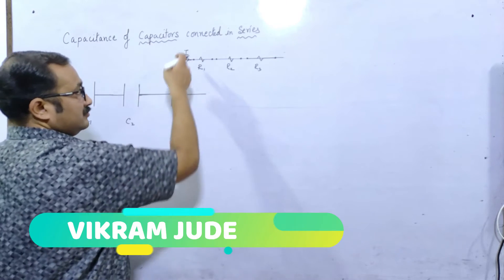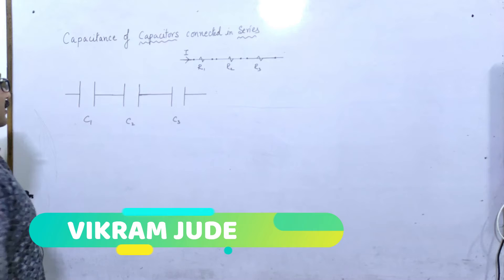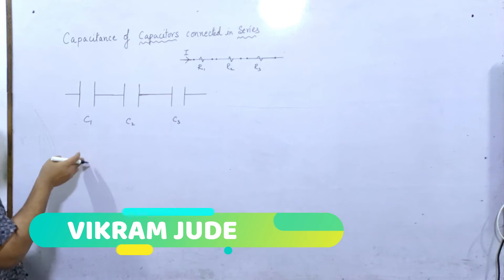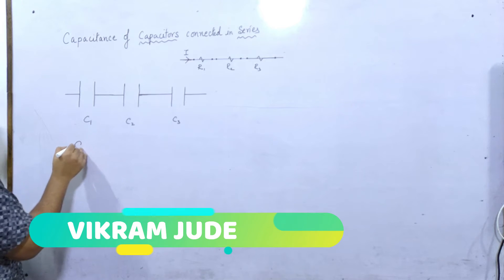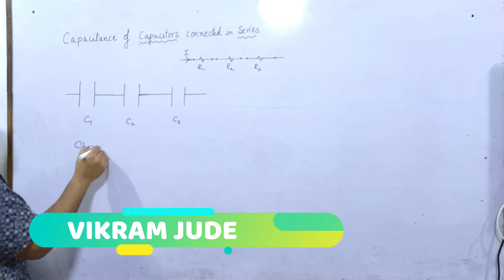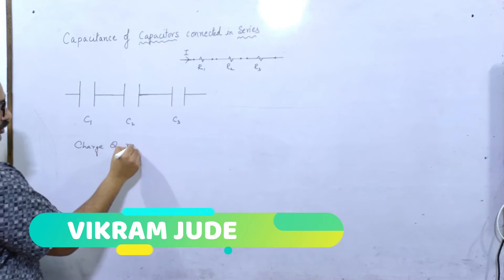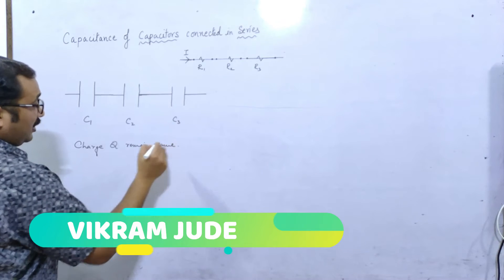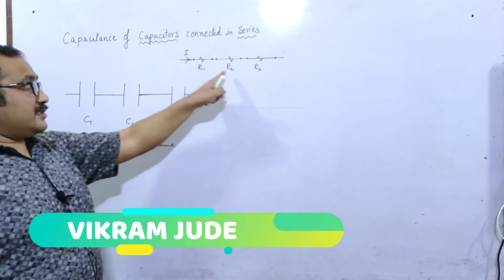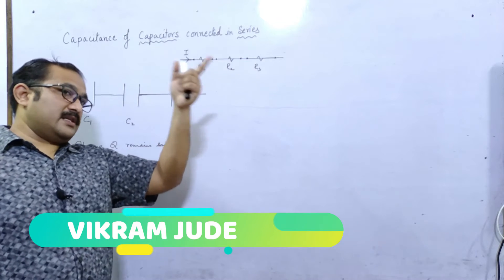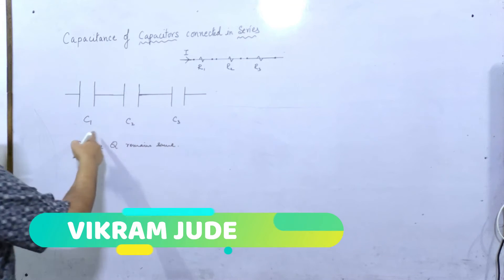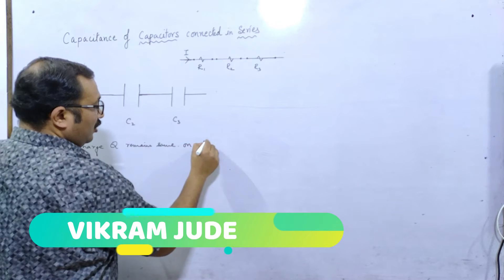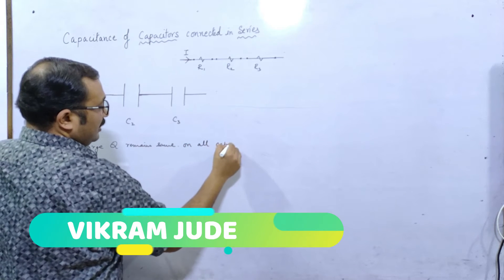यहाँ पर Current same होता है, तो यहाँ पर हम Charge same करेंगे। Charge Q remains same on all capacitors. जिस तरह Resistance की जो भी value हो, Current same होता है — उसी तरह Capacitor की जो भी value हो, Charge same रहता है।